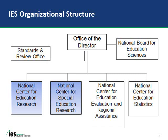The two centers that award grants are highlighted in blue: the National Center for Education Research (NCER) and the National Center for Special Education Research (NCSER). The grant opportunities we'll discuss today are managed through these two research centers. Notably, the research centers are separate from the Standards and Review Office, meaning program officers are not involved in the peer review process. This allows us to work closely with you, providing technical assistance on your applications.